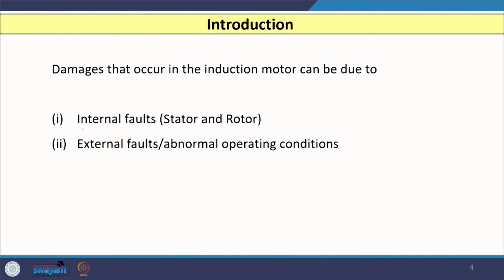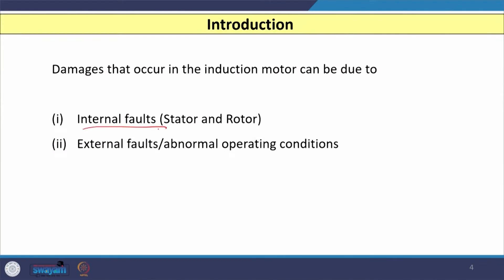Regarding damages that occur in induction motors, there are two main reasons. First, if an internal fault occurs inside the winding — in the stator or rotor — huge damage will occur. Second, because of external faults, those faults may impact the temperature or other parameters of the induction motor, or some abnormal conditions may change its parameters.